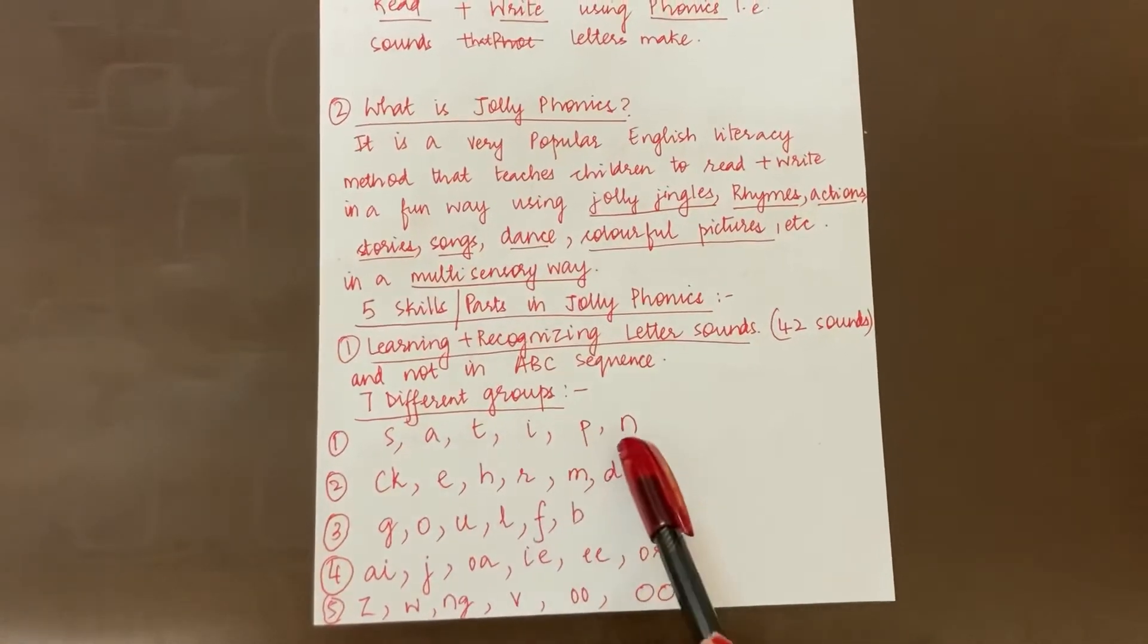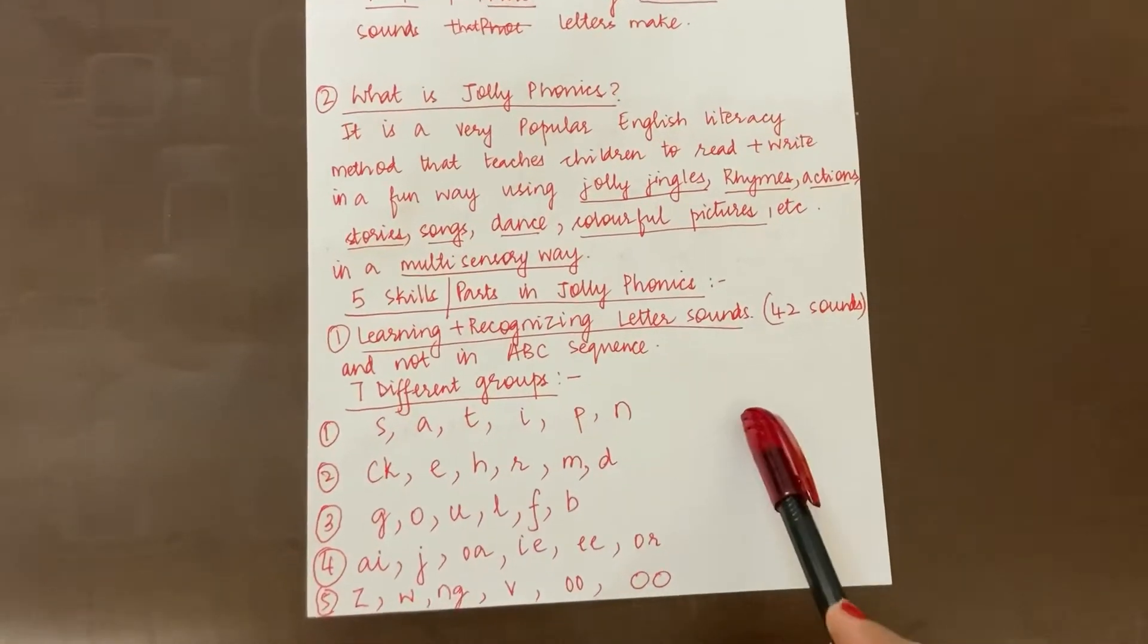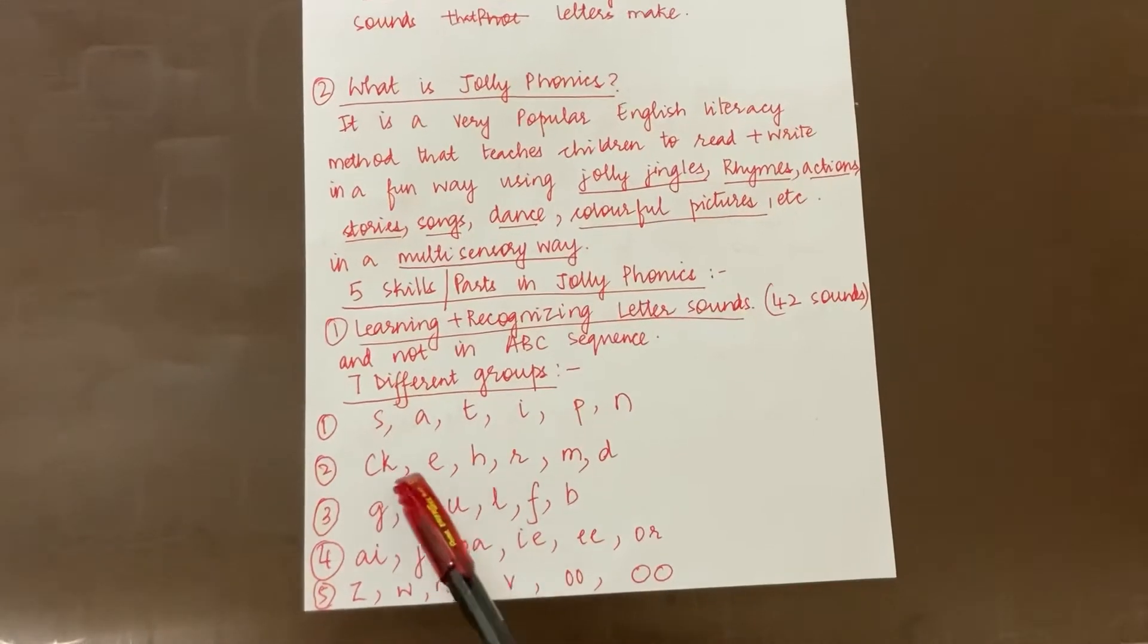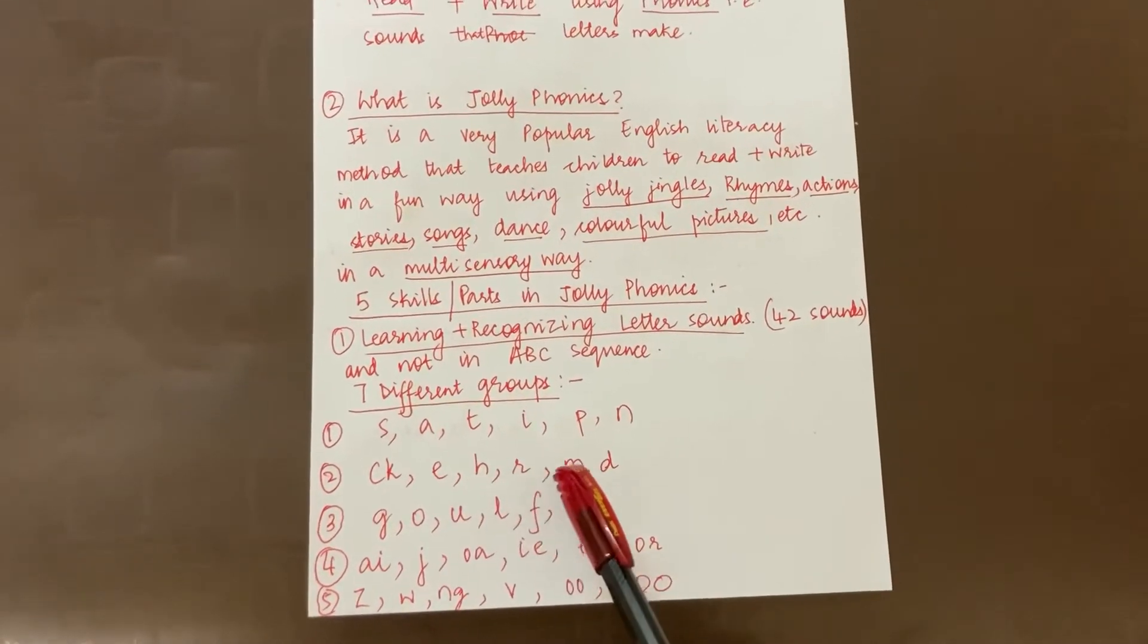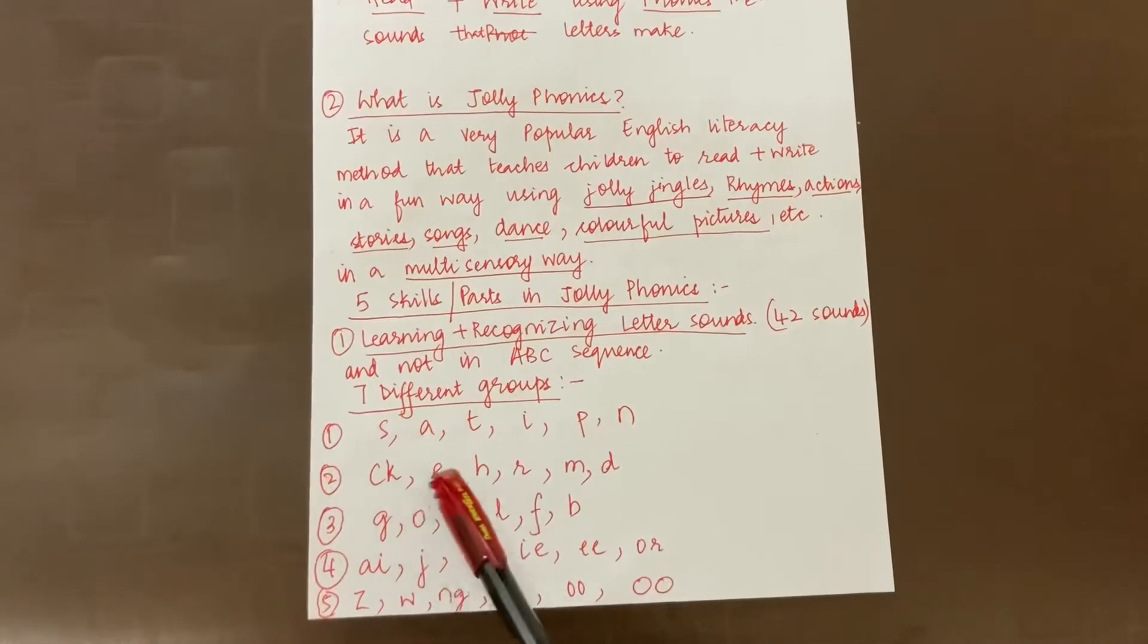S, A, T, I, P, N. That is the group first. Then we have K, Eh, H, R, M, D. So in this manner.